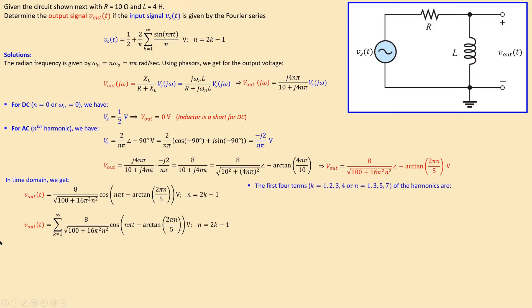This summation runs from k = 1 all the way to infinity, so there are many terms. We can compute 10, 20, 40, or 100 terms depending on the desired accuracy. Looking at the first four terms — k = 1, 2, 3, 4 — corresponding to n = 1, 3, 5, 7, which are the harmonics, let's work through the details.